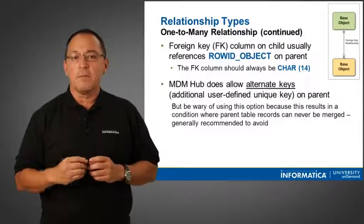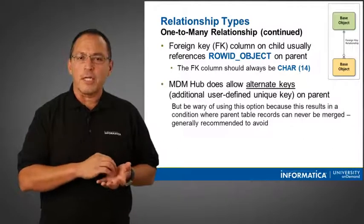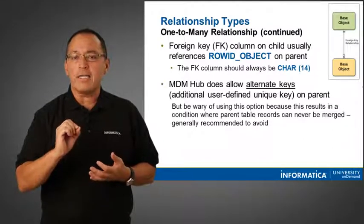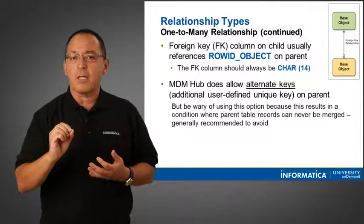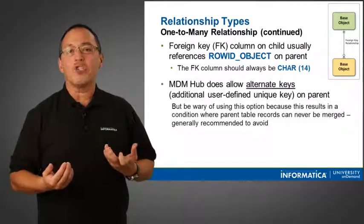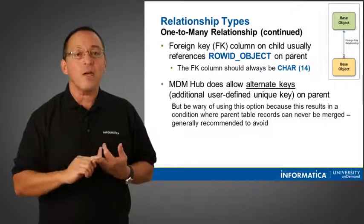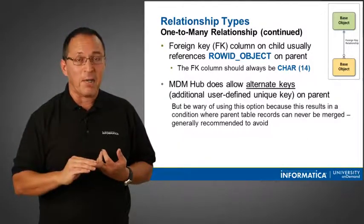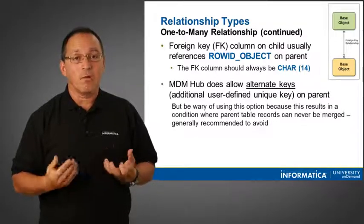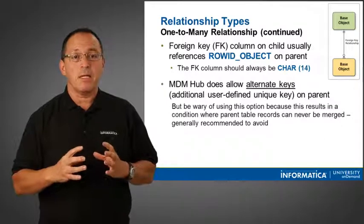The foreign key column on a child, as I said earlier, usually and normally references the row ID of the object. This is why we said that the foreign key should be char 14, because the row ID object is automatically created by the hub when you create a base object, and it is a char 14. So now you see the mystery being uncovered.